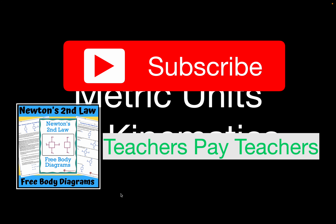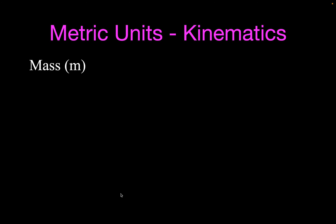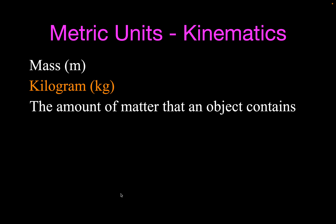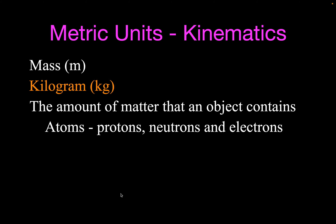Let's get started with the units for mass. What is the unit for mass that we use? That is the kilogram — that's the base unit for mass. What is a kilogram? We often say the kilogram is just the amount of matter that an object contains. What it contains is atoms, and those atoms are made up of protons, neutrons, and electrons.